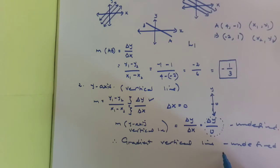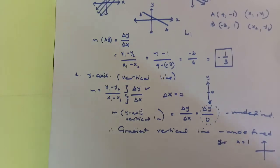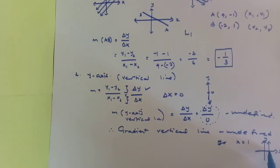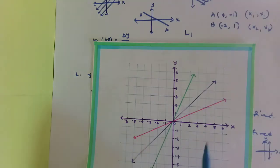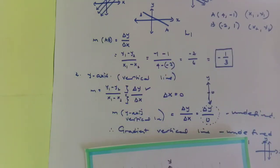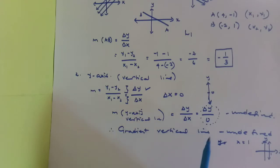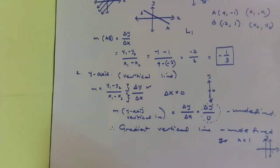For example, if you're given a vertical line such as x equals 1 and asked to find its gradient, you'll reach a point where you're dividing by zero. Don't panic — the gradient is simply undefined. When you encounter this situation, you know it's a vertical line and its gradient is undefined.